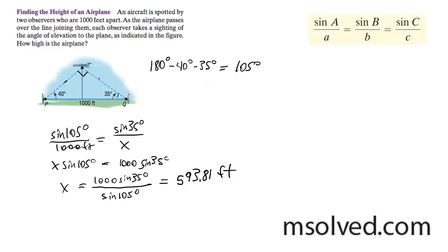This gives us 593.81 feet. And then for our side over here, I'll go ahead and solve this. We get, I'll call that x2. So we get sine of 40 over x is equal to, I'll call it x2.